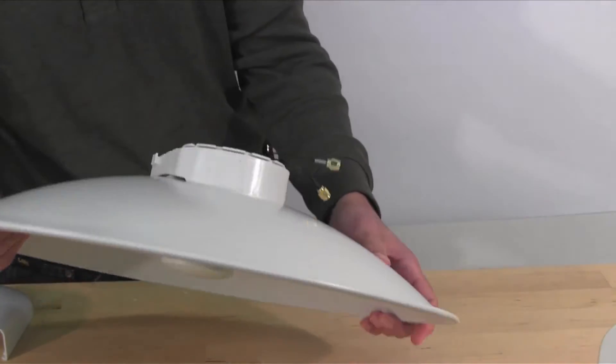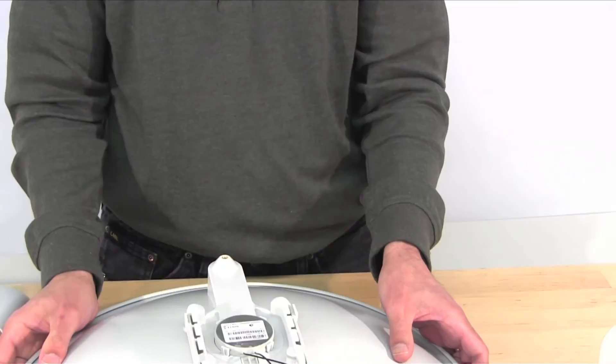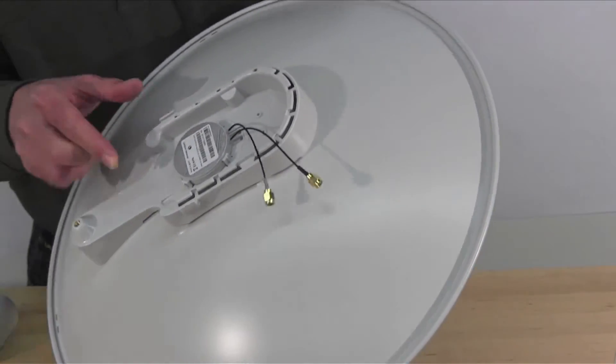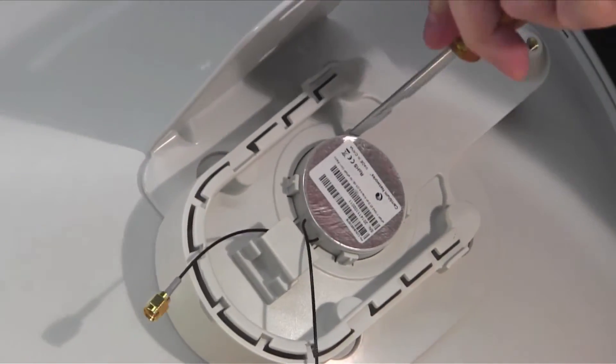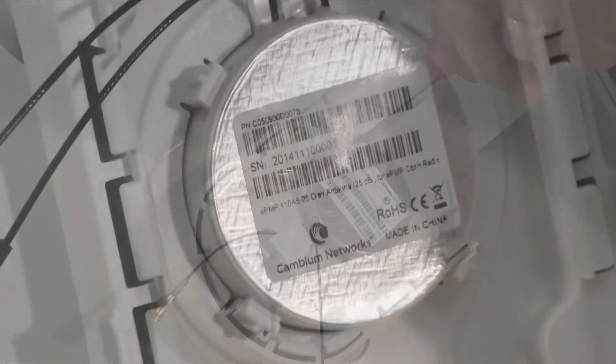Turn the dish over and ensure that the feed horn is properly seated by ensuring the clips are sitting within the notches. You may choose to use a flathead screwdriver to further position the clips.